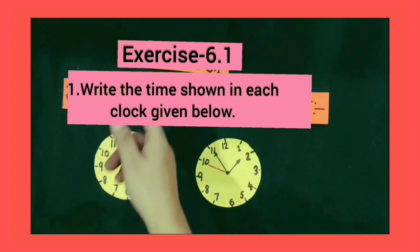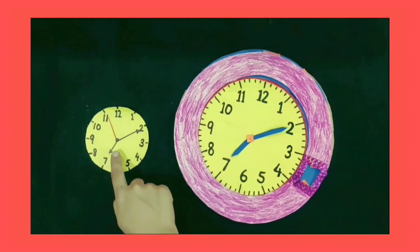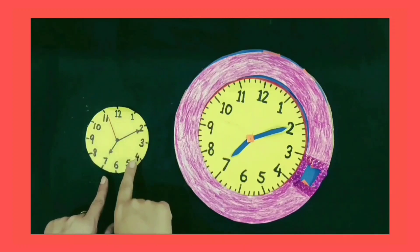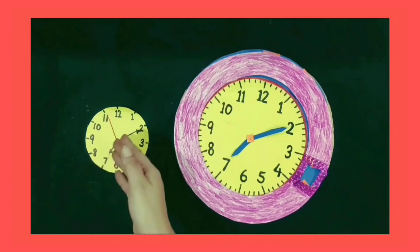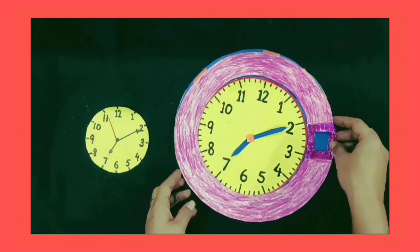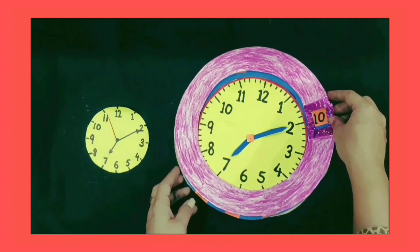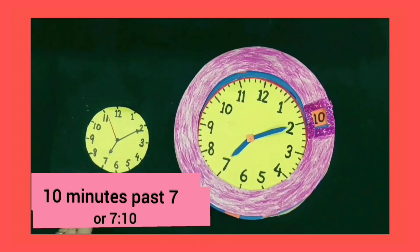Students, now we will solve the first sum of exercise 6.1 — write the time shown in each clock given below. Now we discuss its first part. In this clock, the hour hand is on number 7 and the minute hand is on number 2. The time is 10 minutes past 7. So we write it as 7:10 or 10 minutes past 7.